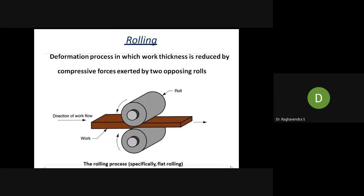The rolling process is a deformation process in which work thickness is reduced by compressive forces exerted by two opposing rollers. From the diagram, you can see one roller rotating clockwise and the other anti-clockwise. The metal piece (shown in brown) has its thickness reduced at the output end. For example, if you have 10 mm thickness, by adjusting the roller gap you can achieve whatever desired thickness you require. That is the meaning of rolling — simply reducing the thickness of the material.